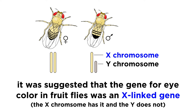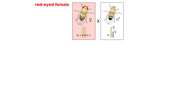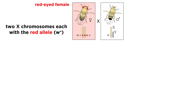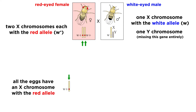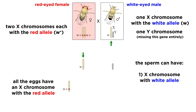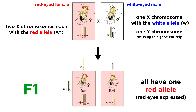The reasoning went as follows. The original parental generation was a red-eyed female with two X chromosomes, each with the red allele, which is represented by the letter W with a plus in superscript, and a white-eyed male with an X chromosome containing the white allele, represented by the letter W, and a Y chromosome, which does not contain the gene in question. In producing gametes, all the female eggs would have an X chromosome with the red allele, while for the male, half would have an X chromosome with the white allele, and half would have the Y chromosome without this gene. This means that all of the F1 generation would have precisely one red allele, and thus red eyes, since this is the dominant allele.